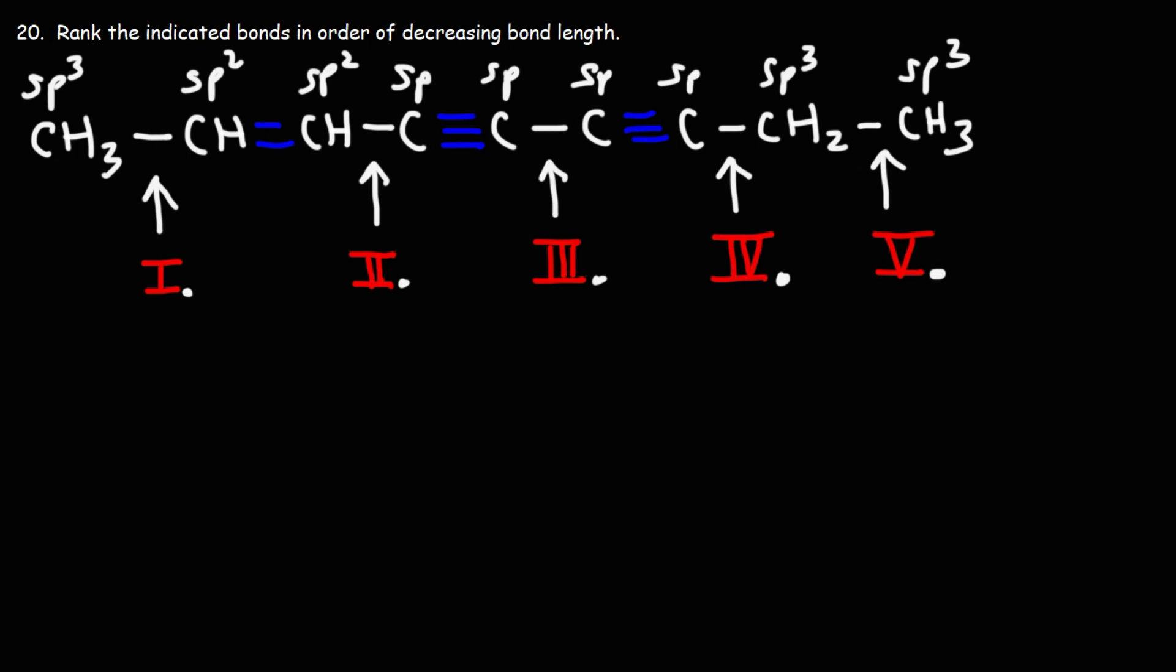So bond number one, it's formed from the overlap of an sp3 hybrid orbital and an sp2 hybrid orbital. Now, the single bond number two is formed from the overlap of an sp2 hybrid orbital and an sp hybrid orbital. For number three, it's sp, sp. For number four, it's sp, sp3, and number five, sp3, sp3.